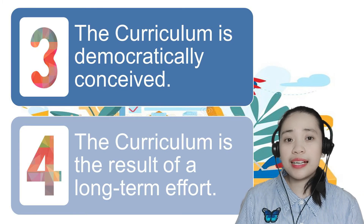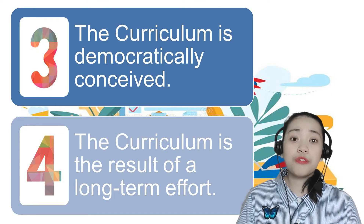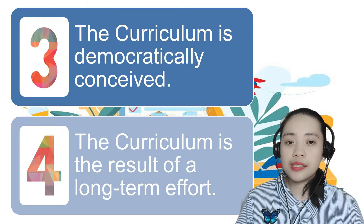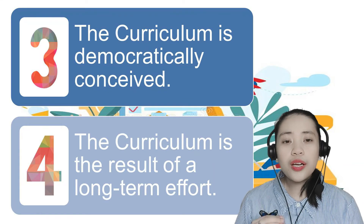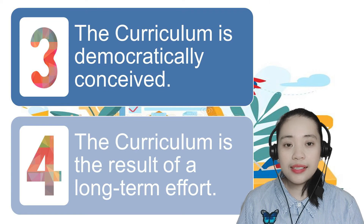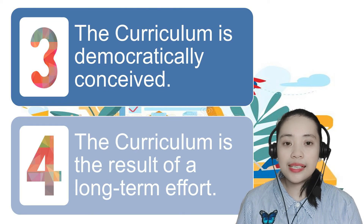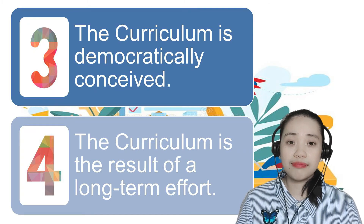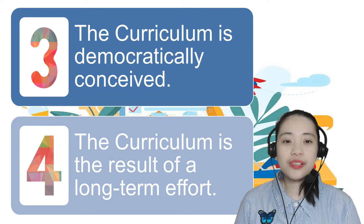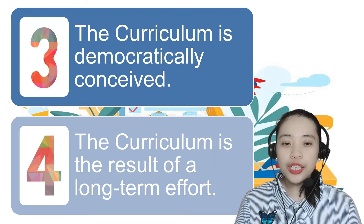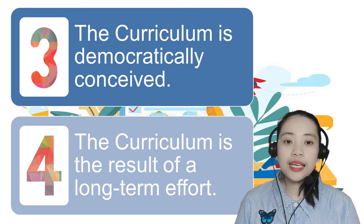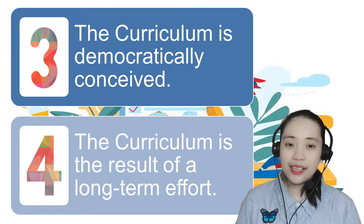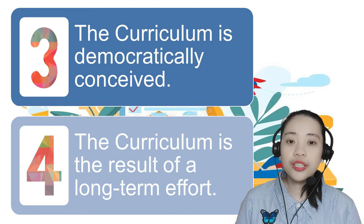Third, the curriculum is democratically conceived. A good curriculum is developed through the efforts of a group of individuals from different sectors of society who are knowledgeable about the interests, needs, and resources of the learner and the society as a whole. The curriculum is the product of many minds and energies. Fourth, the curriculum is the result of a long-term effort. A good curriculum is a product of a long and tedious process — it takes a long period of time in planning, management, evaluation, and development.